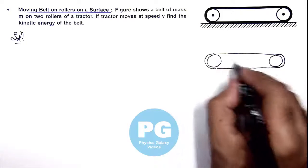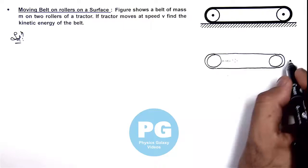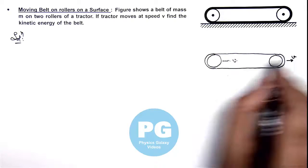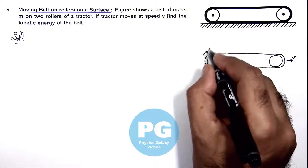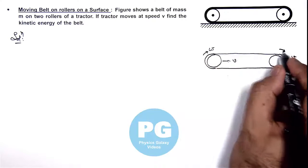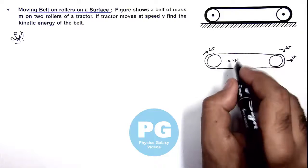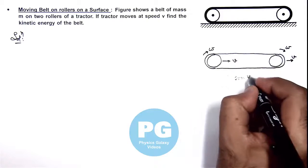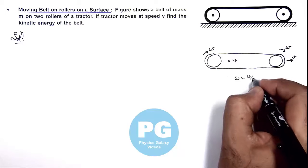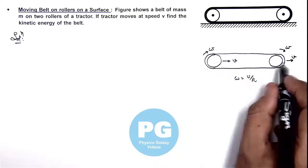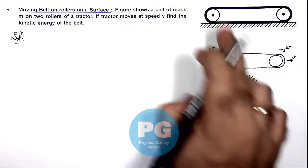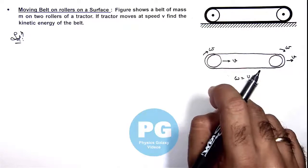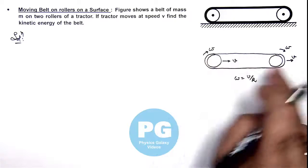So here, if the rollers are moving with velocity v, we can consider that the circular parts would be moving with angular speed omega. And here, omega can be given as v by r, if the belt is moving on the cylinders in such a way that these rollers are in pure rolling.